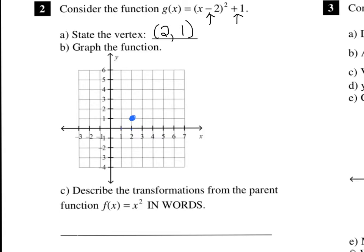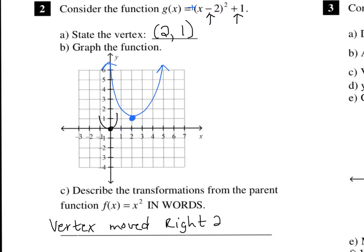Now we just have to figure out if this opens up or down. When we look in front of the parentheses, there's a positive 1 out there, so we know this opens up. Now we just need to say where that vertex moved in relation to the parent function, which normally starts at (0, 0). So you can say the vertex moved to the right 2 and up 1 unit.